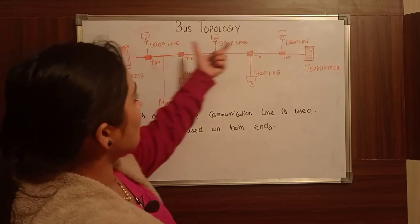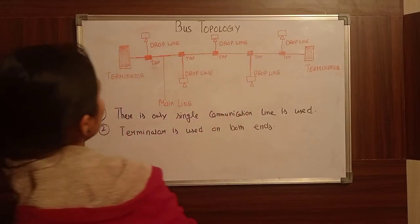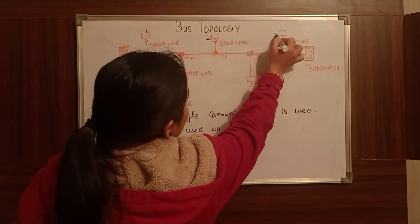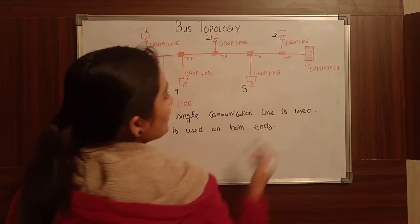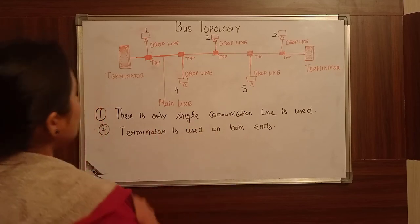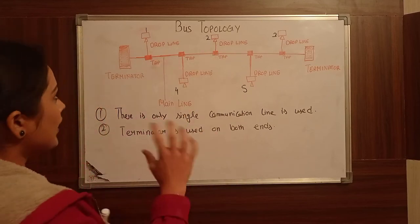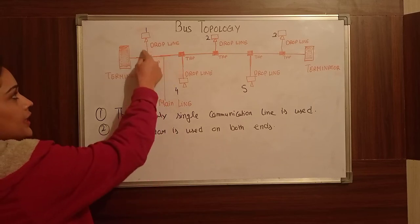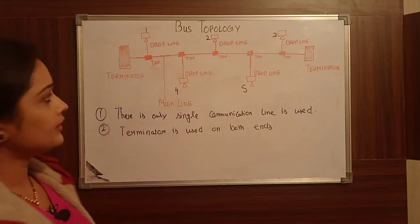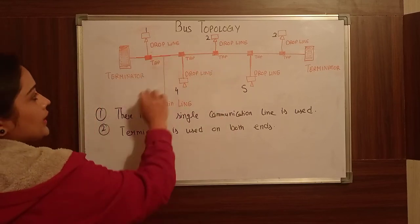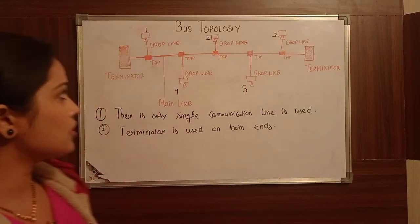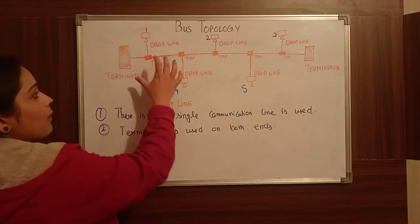A number of nodes are connected to the main line. There is a first node, second node, third node, fourth node, fifth node, and so on. These nodes are connected to the main line using a drop line and tap. The drop line and tap help to connect all the devices to the bus.